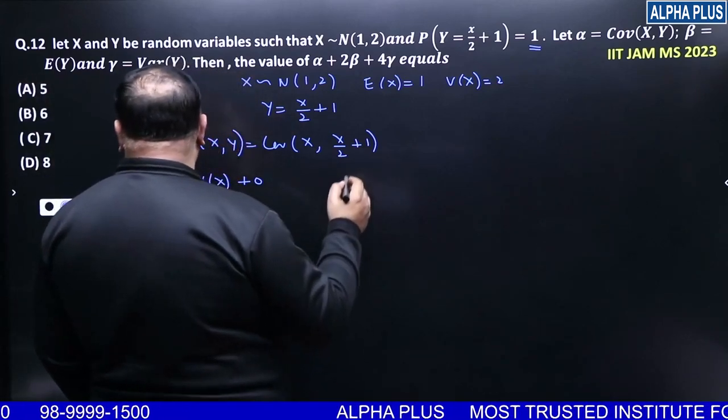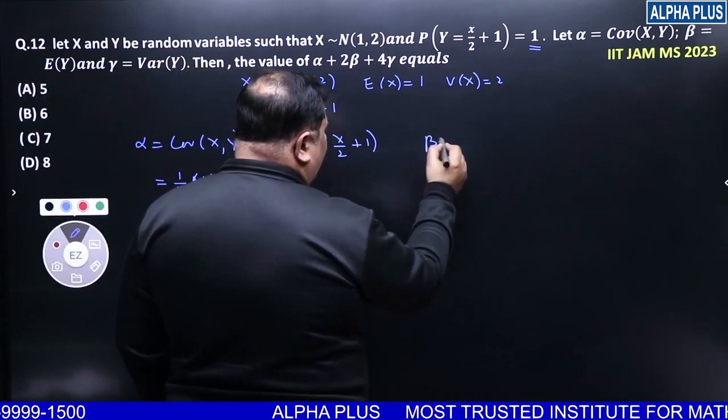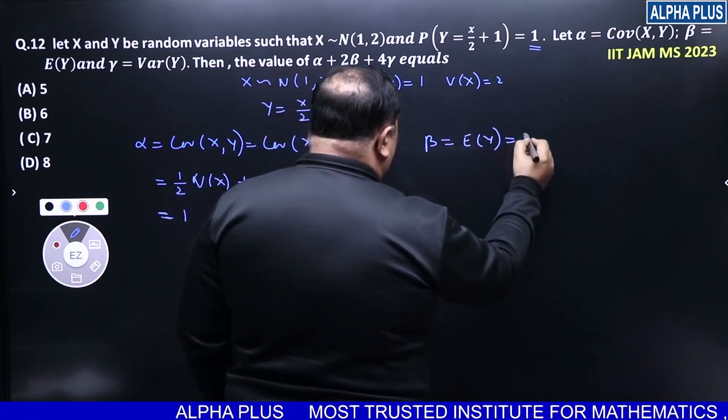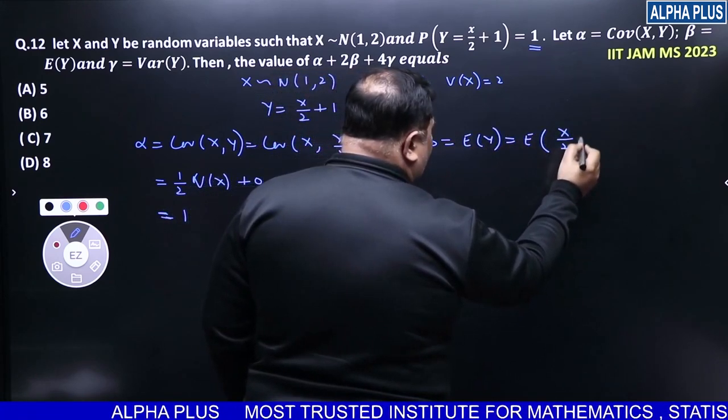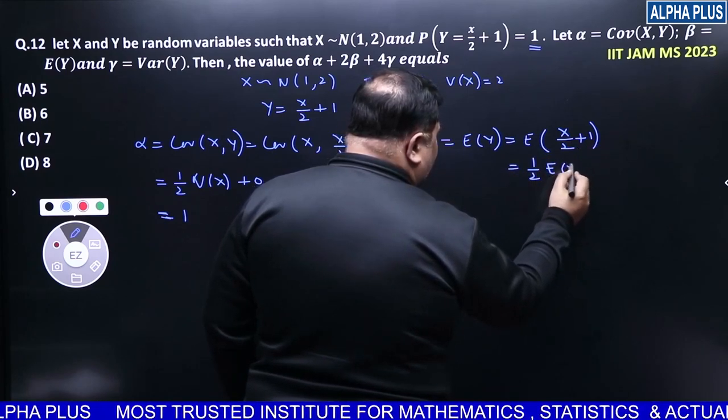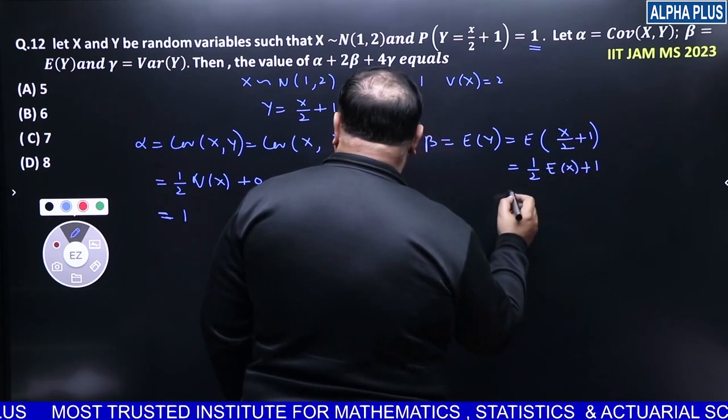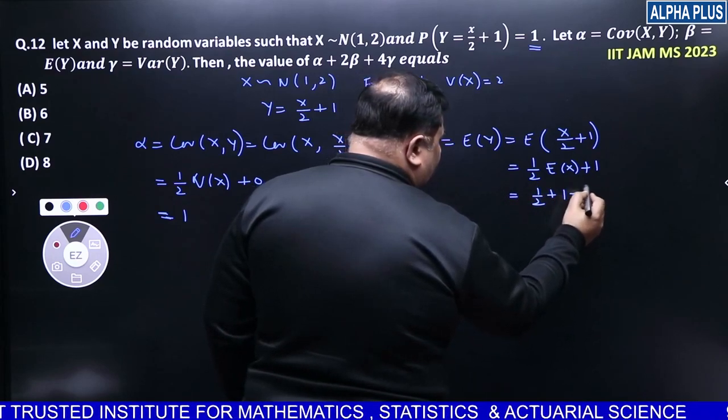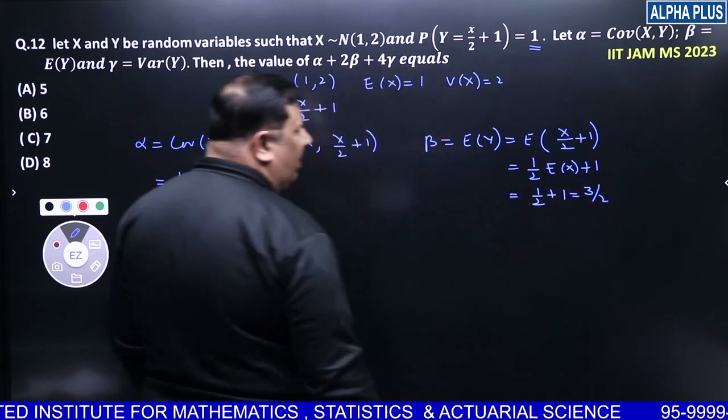Then we have beta is equal to expectation of Y. So, expectation of Y is X by 2 plus 1. Which is 1 by 2 expectation of X plus 1. Expectation of X is 1, which is 3 by 2 is the answer. So, beta is 3 by 2.